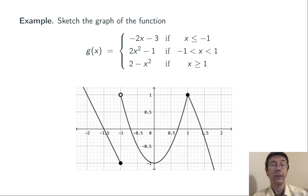We start with x less than or equal to negative 1. To the left of negative 1, this is going to be the graph of a line with slope negative 2. I've put a solid dot at the point negative 1 comma negative 1 to indicate that when x is negative 1, we are still on that line y equals negative 2x minus 3.